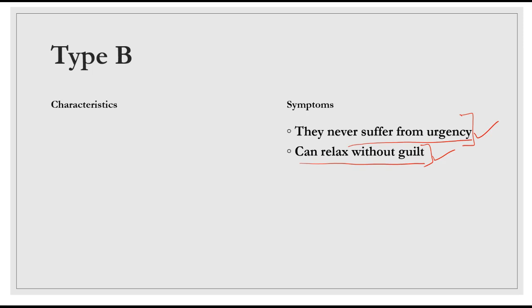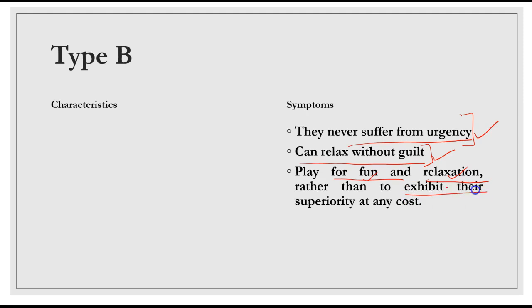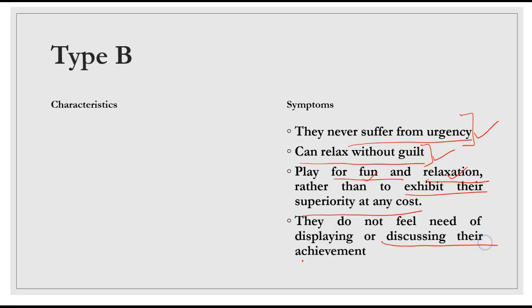They are not part of any race. They play for fun and relaxation rather than exhibiting their superiority. They do not feel the need of displaying or discussing their achievements. They don't like to discuss their achievements, whereas Type A always measures their achievements.